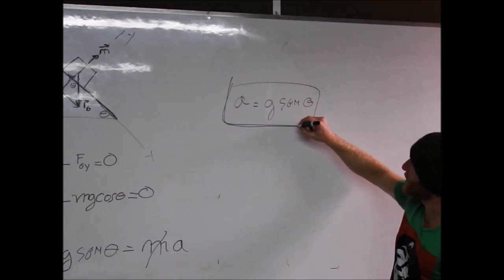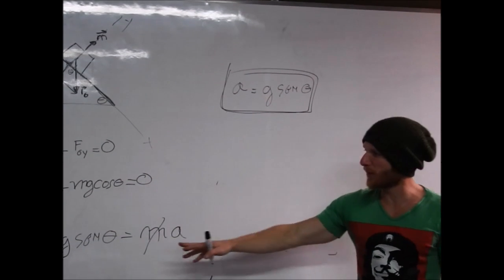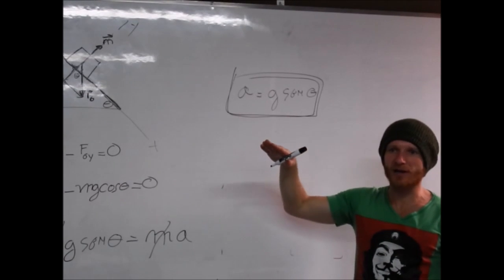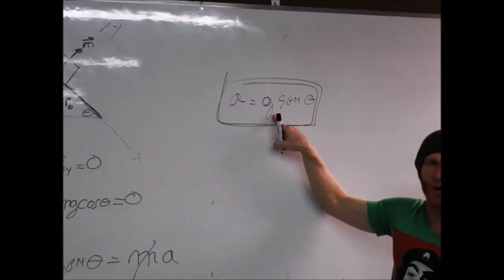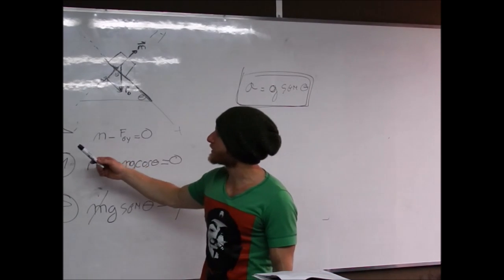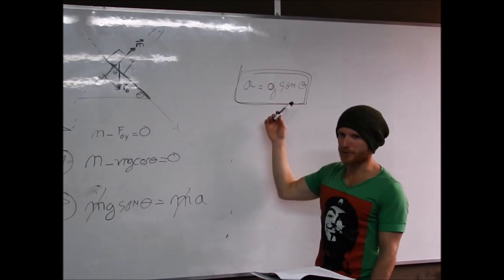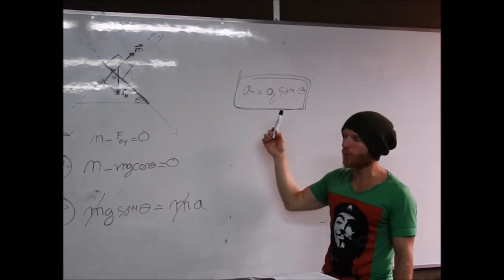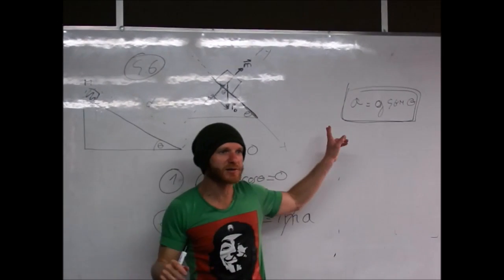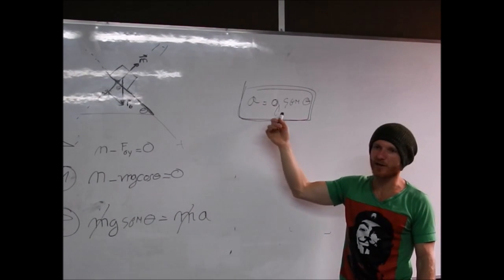¿Qué nos dice esta ecuación a = g·sin(θ)? Casos especiales: cuando el plano es vertical, θ = 90°, sin(90°) = 1, a = 9.8 m/s²: es un cuerpo en caída libre. Cuando el plano es horizontal, θ = 0°, sin(0°) = 0, a = 0: una caja sobre un plano horizontal no acelera.